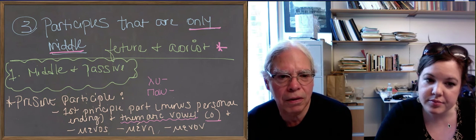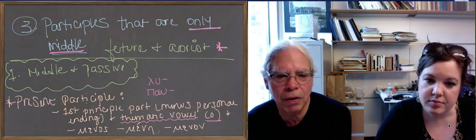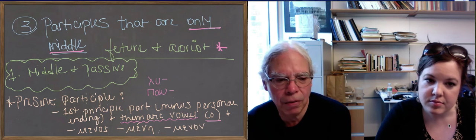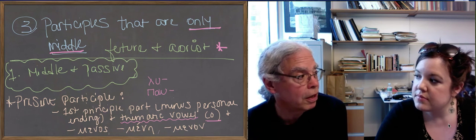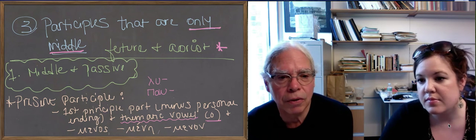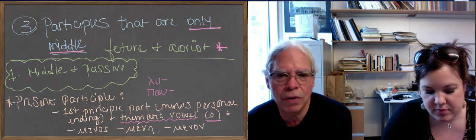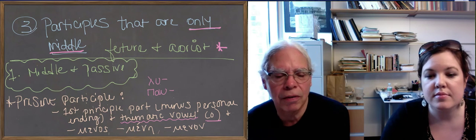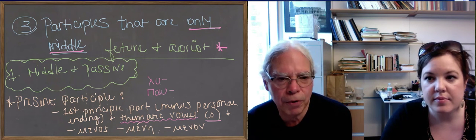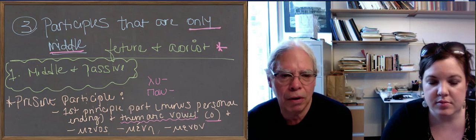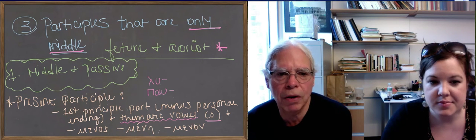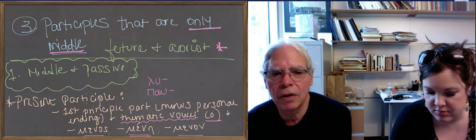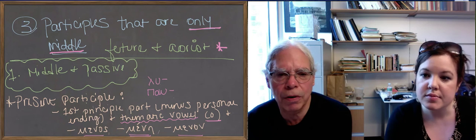So you add the thematic vowel, which is an o. Remember we talked about this before? The contrast between participles having an o thematic vowel is with infinitives that have an e thematic vowel. So you have the first principal part, the thematic vowel o or omicron, and then the suffix, menos, mene, menon.